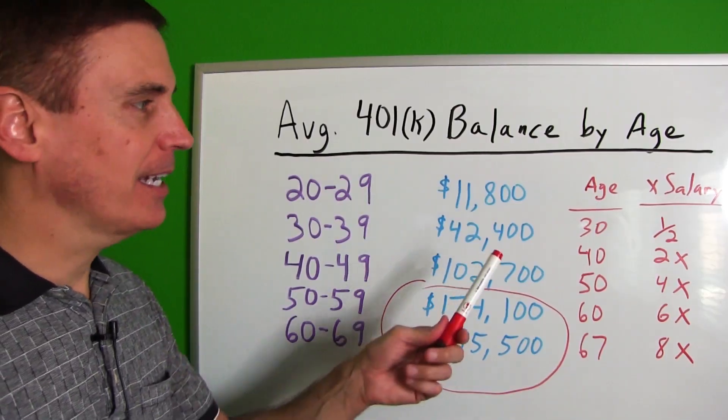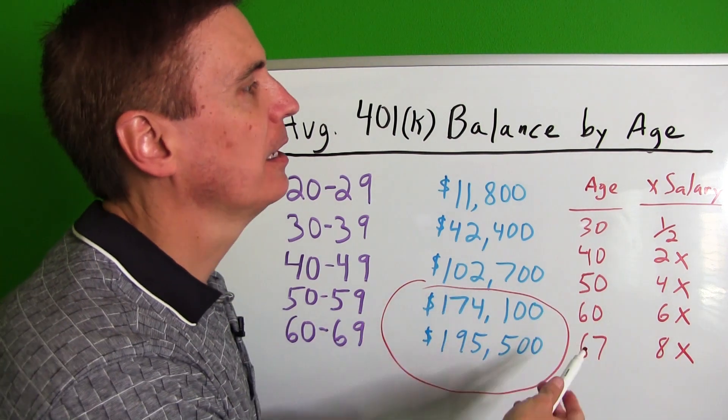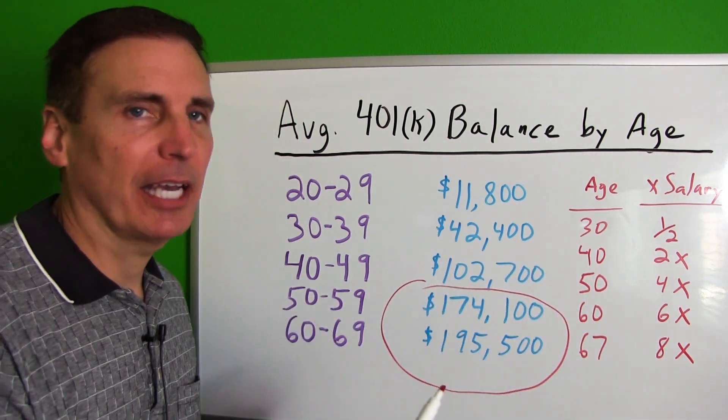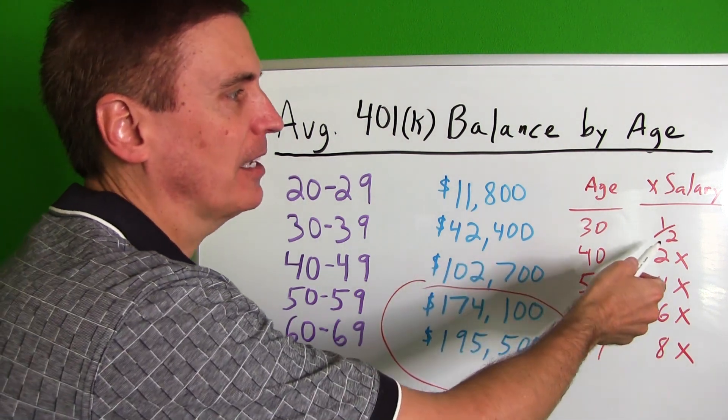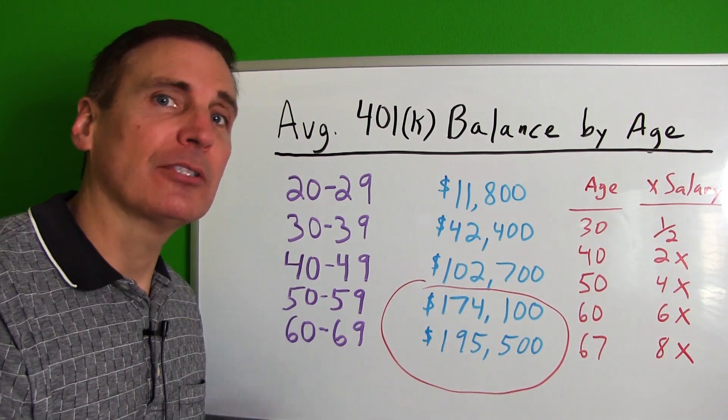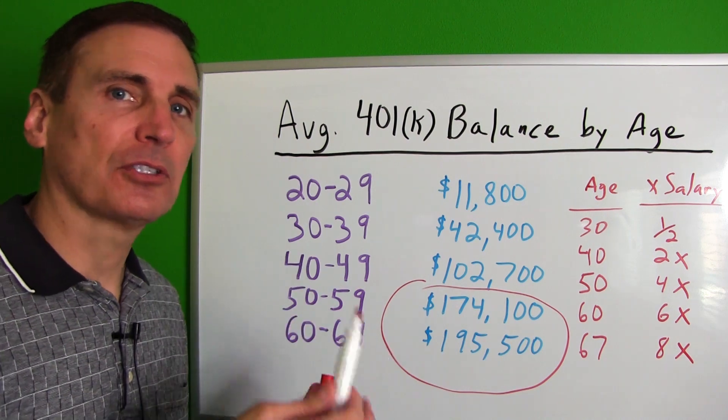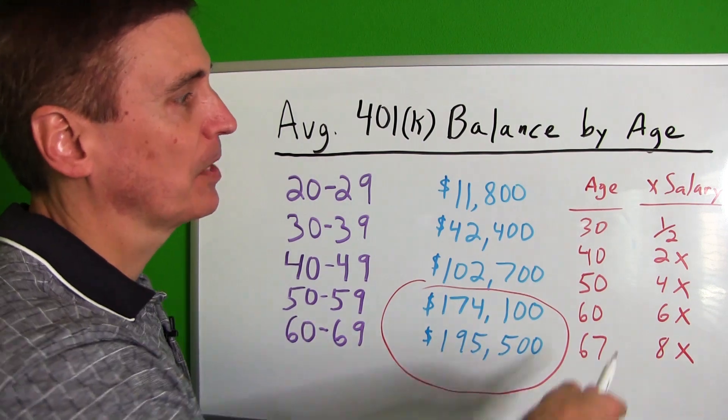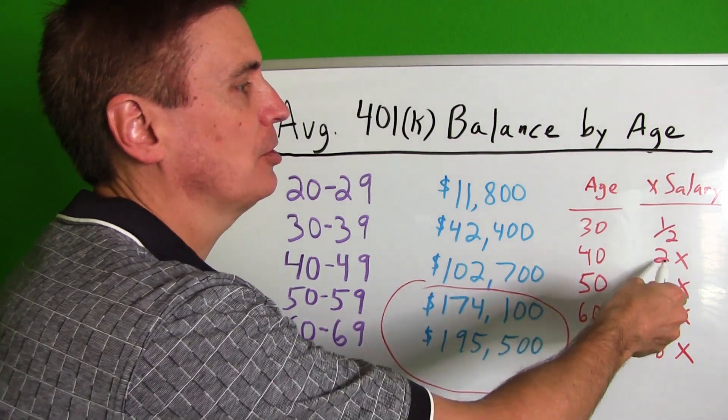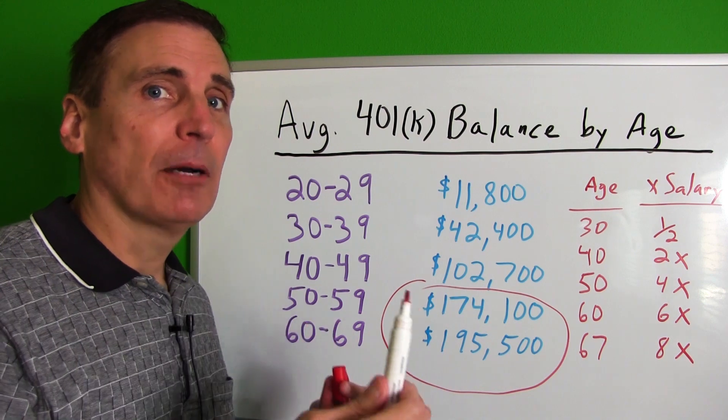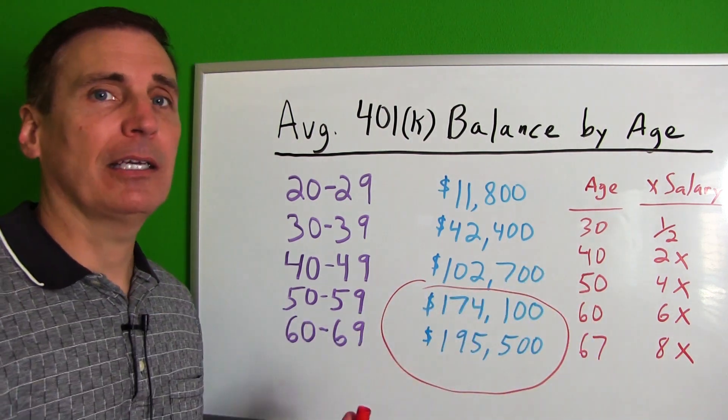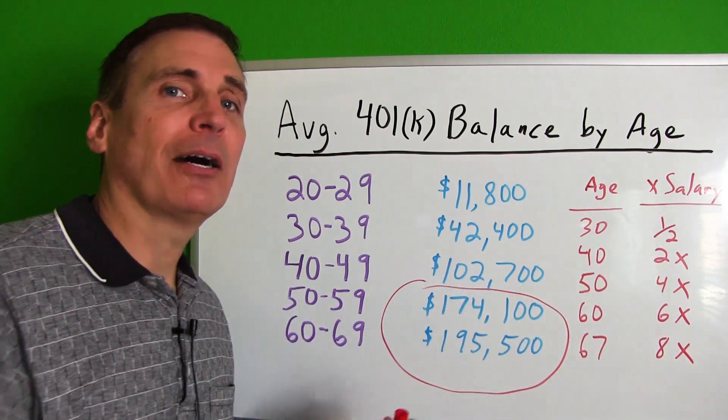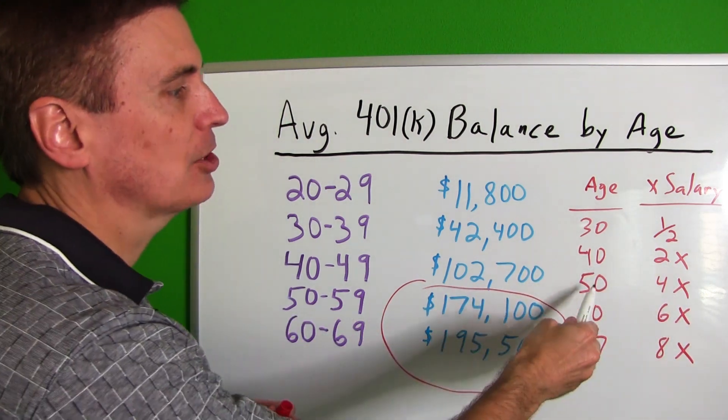Now here are some guidelines that were thrown out by some financial professionals. They say this is the amount of money that you should have saved in your retirement accounts by a certain age. So by age 30, you should have at least half of your annual salary. So if you're making $50,000 a year at age 30, you should have at least $25,000 in your retirement savings. And then by the time you're 40, you should have two times your annual salary saved up in retirement. So if at 40 you're making $100,000, then they say by age 40 you should have about $200,000 in your retirement accounts.